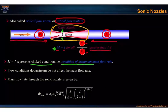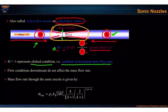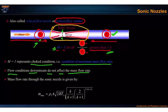The significance of the choked condition is that it represents the condition of maximum mass flow rate. This means that no matter what happens downstream, even if pressure p2 changes, as long as we keep p1 constant and maintain the pressure ratio p1 over p2 greater than 1.4, the downstream flow conditions will not affect the mass flow rate. The flow rate depends only on p1.